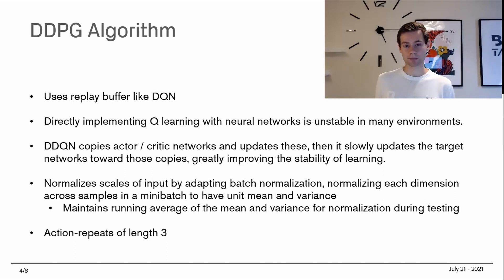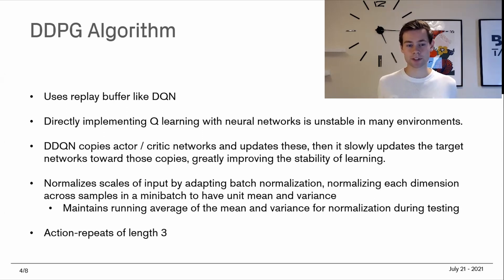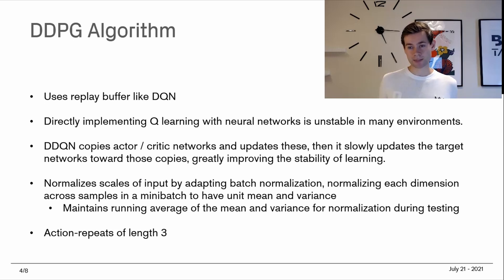A third technique applied is normalization and scaling of inputs using batch normalization, which normalizes each dimension across samples in a mini-batch to have unit mean and variance. This allows training different models in different environments with different units of input without affecting training, giving a more robust framework for a large variety of inputs. It also maintains a running average of the mean and variance for normalization during the testing phase.